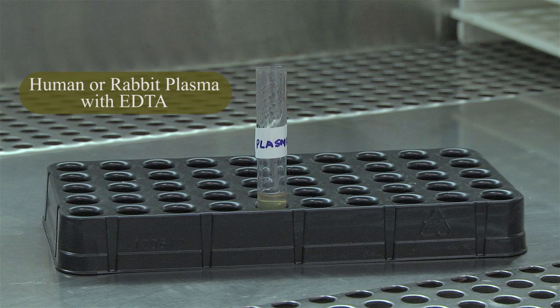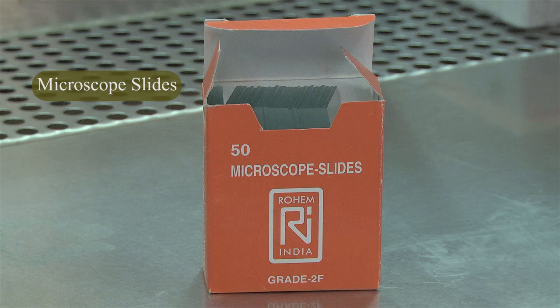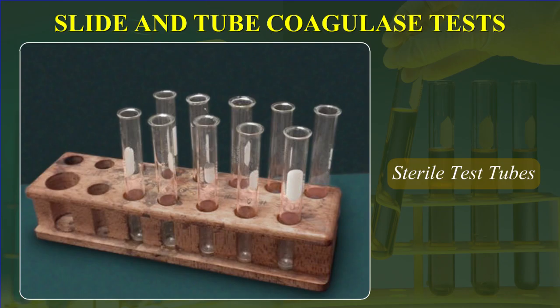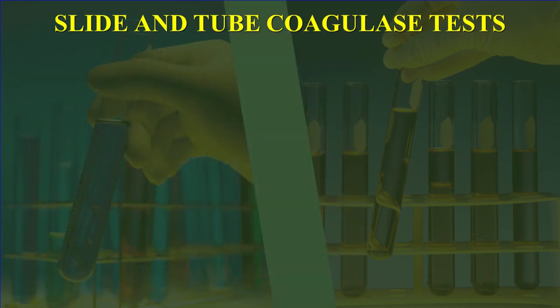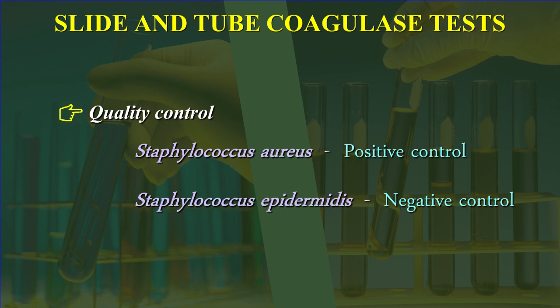Reagents and materials required: human or rabbit plasma with EDTA diluted 1 in 5 with normal saline, clean grease-free glass slides, and sterile test tubes. Quality control: a known strain of Staphylococcus aureus and Staphylococcus epidermidis should be used as positive and negative controls respectively. Each batch of plasma should be tested with these control strains.